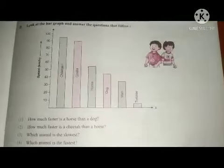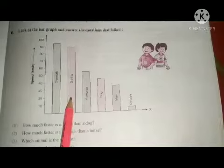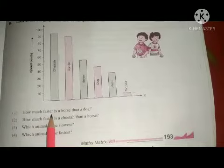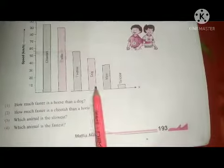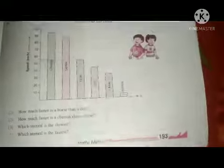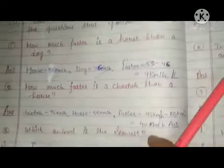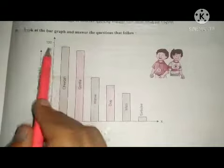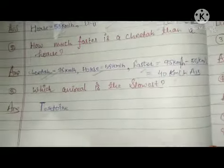Next, look at the bar graph showing the speeds of different animals and answer the following questions. The animals shown are gorilla, horse, dog, man, and tortoise. First question: how much faster is a horse than a dog? The horse speed is 55 and the dog speed is 46. We subtract to find how much faster the horse is.